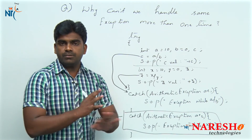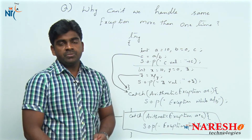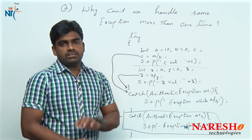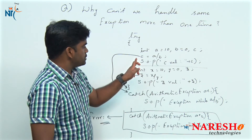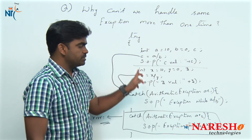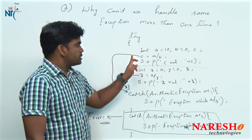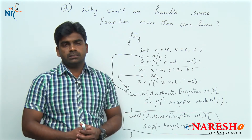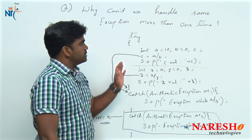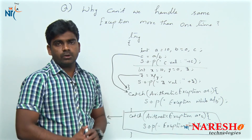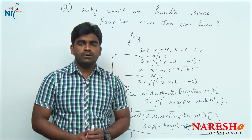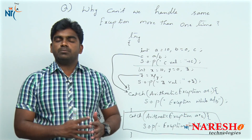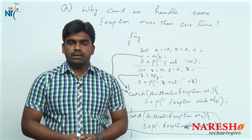The compiler will never check the logic you have written; it only checks the type of exception. Depending on the type of exception, control comes to that catch block and connects. This is the reason. Hope you understood. For more videos, please subscribe to the Naresh Technologies channel. Thank you.